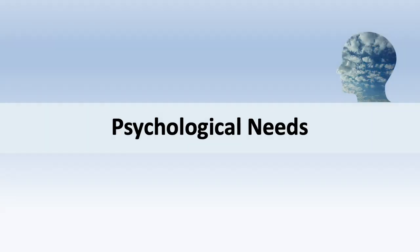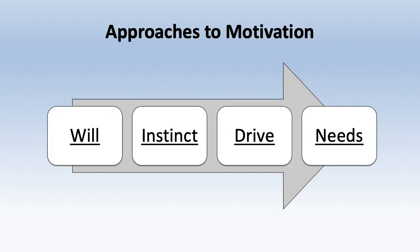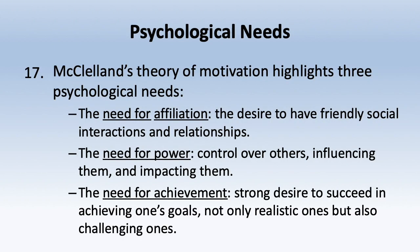Beyond basic physical needs, we also have psychological needs common to all people. McClelland's theory of motivation highlights three important psychological needs. First, the need for affiliation — a desire to have friendly social interactions and relationships. Second, the need for power — we all need a sense of control or influence over others. This isn't necessarily bad; we want to know that we impact people.